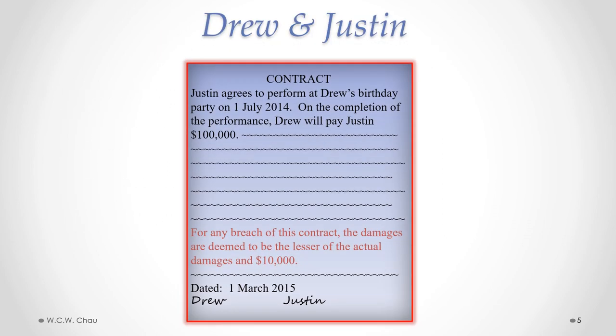Let's say this is the contract between Drew and Justin — a very simplified version of a liquidated damages clause. It simply says that if there is a breach of contract, the damages are deemed to be the lesser of the actual damages and $10,000. The effect of that is to cap the maximum amount of damages for a breach of contract to $10,000.